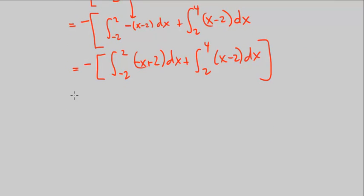So now I can go ahead and evaluate this taking the antiderivative. The antiderivative of this is going to be negative x squared over 2 plus 2x from negative 2 to 2, plus the antiderivative of this is x squared over 2 minus 2x from 2 to 4.